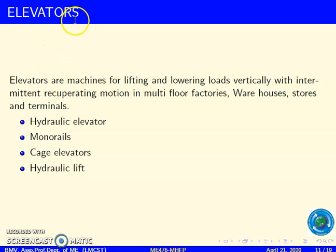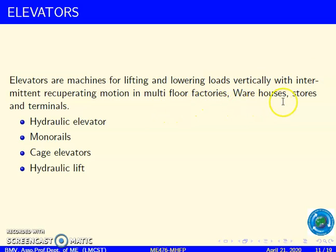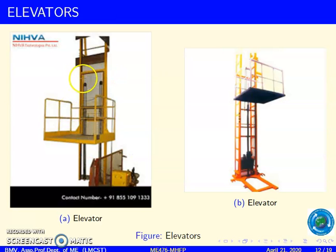Now we will see what is an elevator. Elevators are machines for lifting and lowering loads vertically with intermittent motion in multi-floor factories, warehouses, stores and terminals. These are the different types of elevators: hydraulic elevators, monorails, gauge elevators and hydraulic lift. This figure shows the types of elevators.